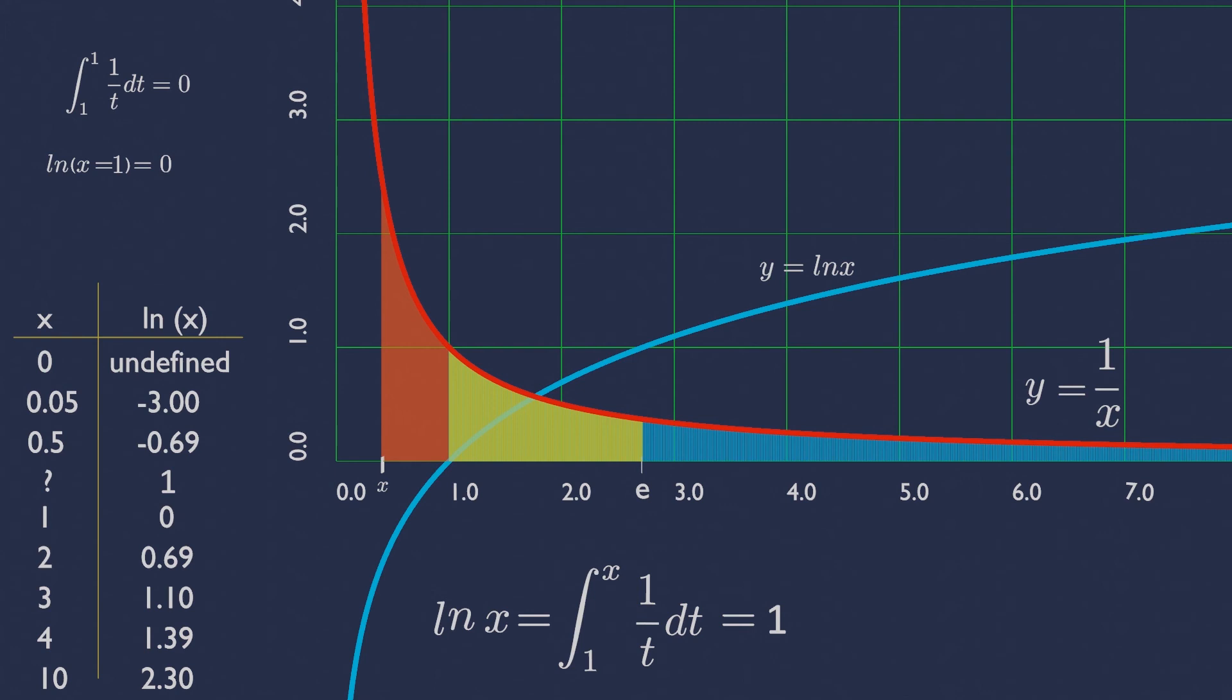Look! This important number is e. Interpreted geometrically, the number e corresponds to the point on the x-axis for which the area under the graph of